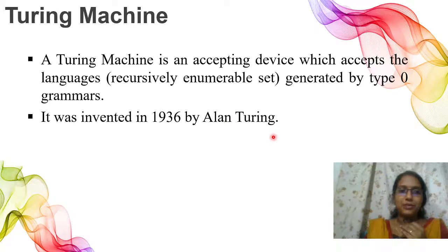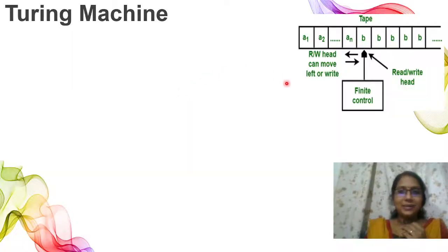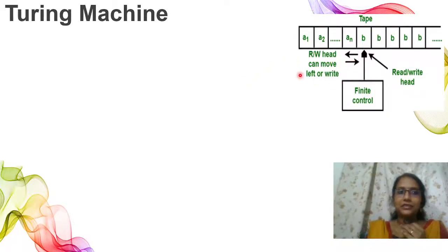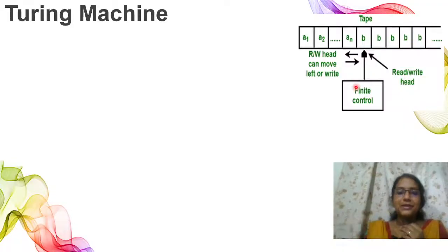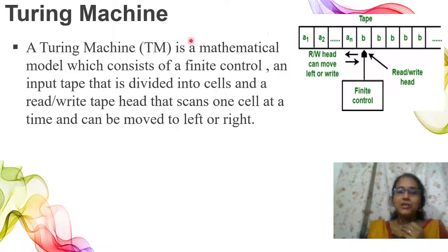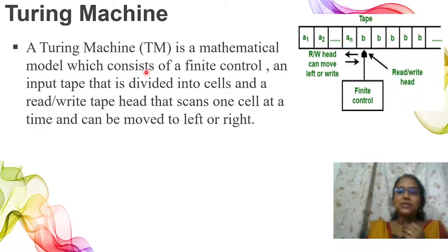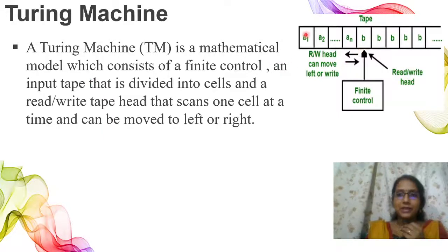The Turing Machine — just for information — is not like the finite automata or PDA we learned earlier. A Turing Machine is a mathematical abstraction, a conceptual model. It consists of a finite control, as usual with a finite number of states, and an input tape that is divided into cells.